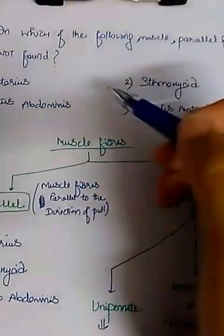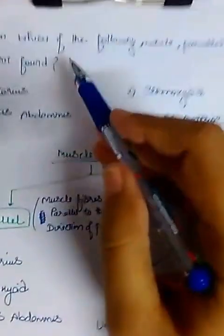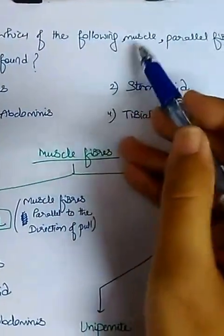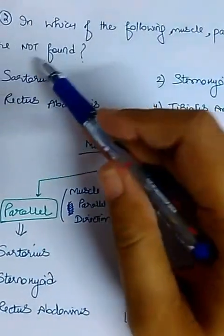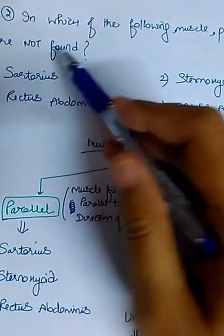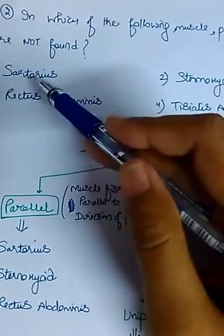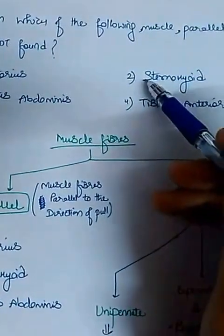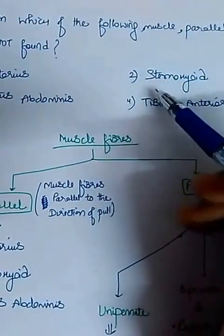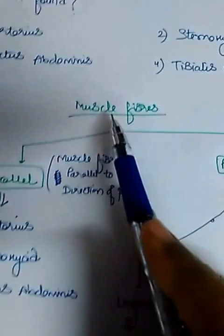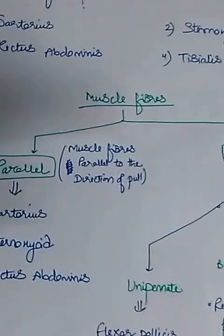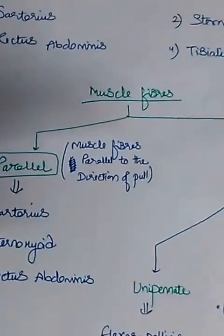The next question is: in which of the following muscles are parallel fibers not found? The options are sartorius, rectus abdominis, sternohyoid, and tibialis anterior. Muscle fibers are of various shapes — basically they can be parallel or they can be pennate, apart from two other types.